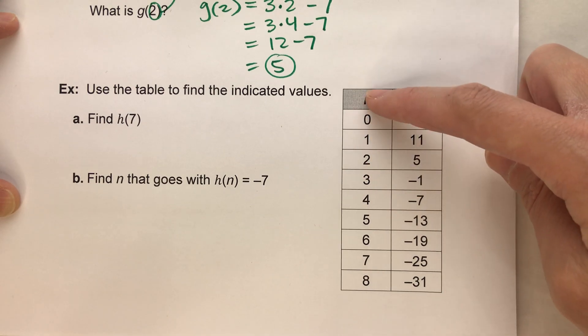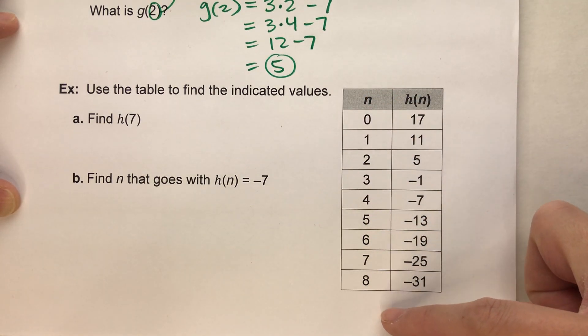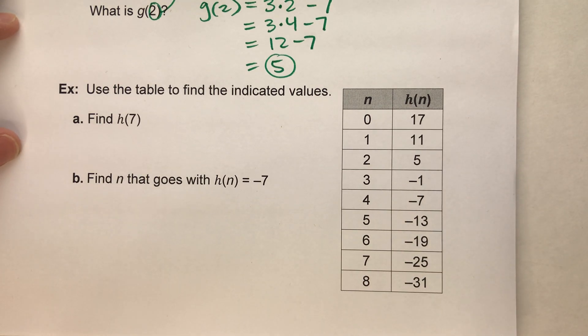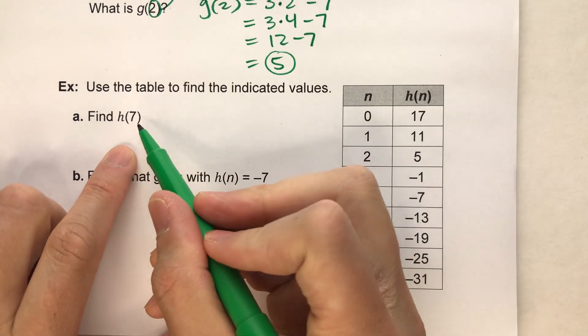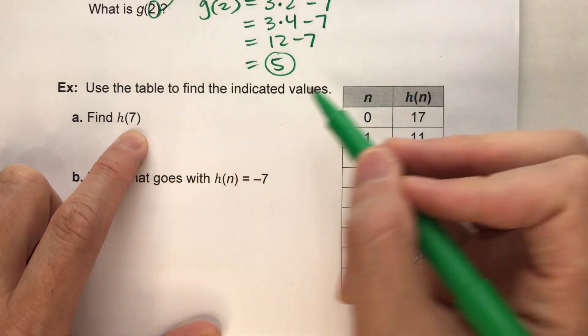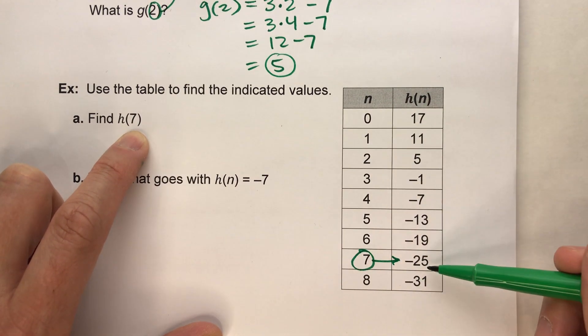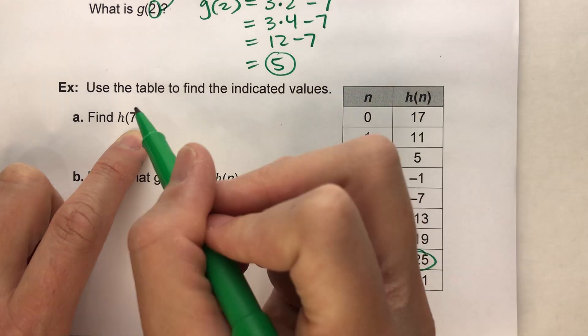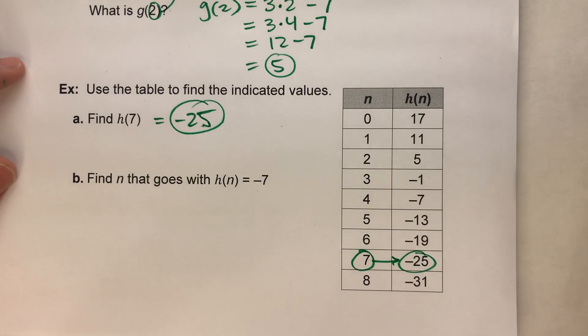So if we put 2 in for n into our function rule, we get 5. So let's see what we do with this. It says, find h of 7. So if we put 7 in for n, notice, the value of our function, negative 25. And that's your answer.